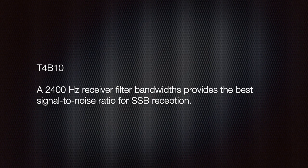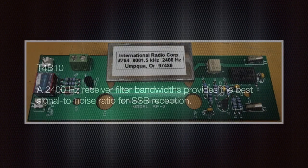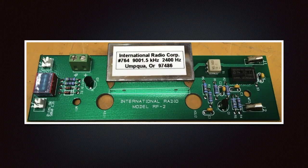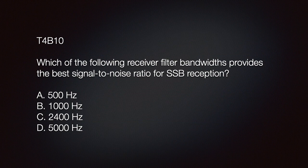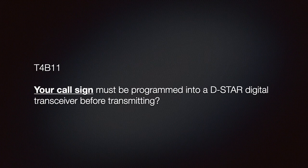Be aware that a 2400 Hz receiver filter bandwidth provides the best signal-to-noise ratio for single sideband reception. These filters are mainly found in HF rigs. The exam question asks which receiver filter bandwidth provides the best signal-to-noise ratio for single sideband reception — with choices of 500 Hz, 1000 Hz, 2400 Hz, or 5000 Hz. The correct answer is C — 2400 Hz.